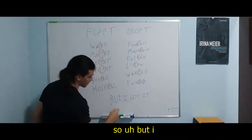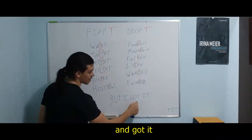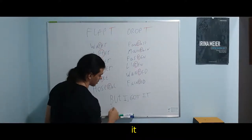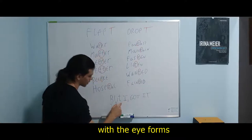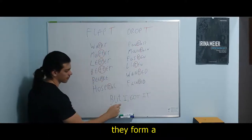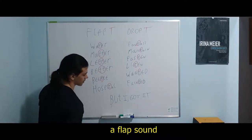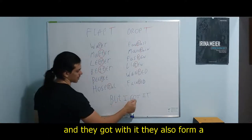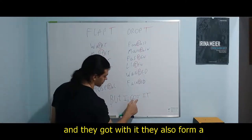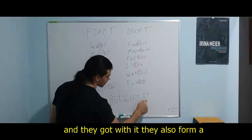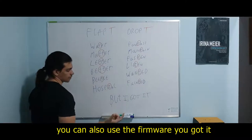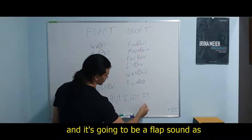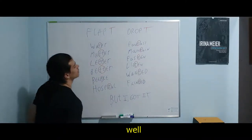So, 'but I' and 'got it' — the T with the I forms a flap sound, and 'got' with 'it' also forms a flap sound, so 'got it.' You can also use the informal way — 'got it' — and it's going to be a flap sound as well.